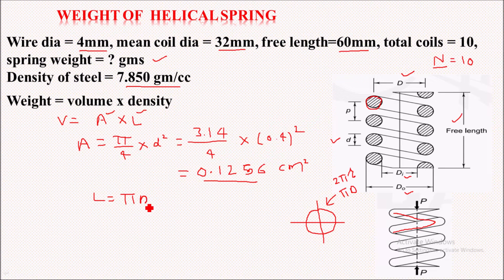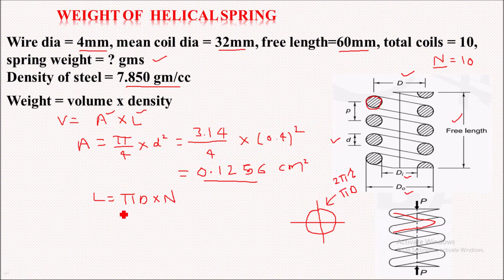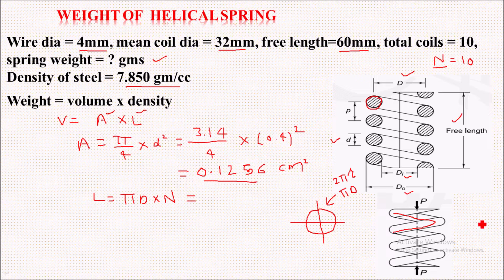But here we have total N turns, so we will multiply it by N. This gives you the total length of the coils. So πDN is the formula to calculate the total length of the coils.